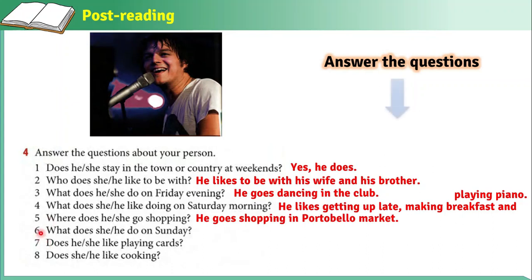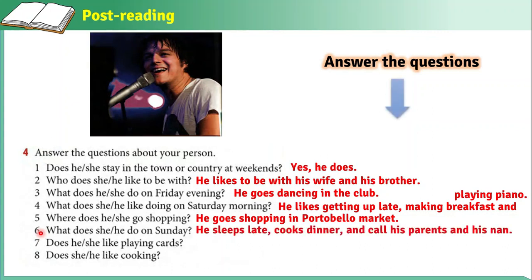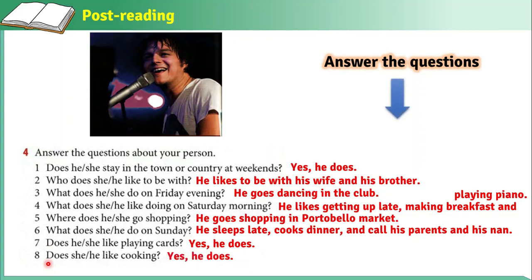Number six: what does he do on Sunday? The activity he does on Sunday is he sleeps late, cooks dinner, and calls his parents and his nan. Number seven: does he like playing cards? Yes, he does — he likes playing cards. Number eight: does he like cooking? Yes, he does. This is the information about Jamie Cullum.